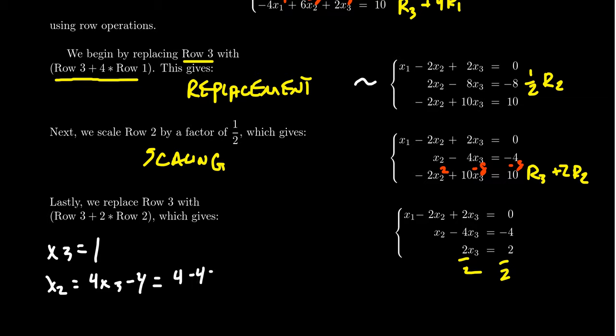But now look at the first equation. The first equation depends on x1, x2, and x3. I know what x3 is. I know what x2 is. I could plug those values to find x1. So, notice if you solve for x1, you're going to get x1 equals 2x2 minus 2x3. We know what x2 is. It's a 0. We know what x3 is. It's a 1. And so, we see that x1 is going to be negative 2.